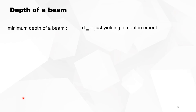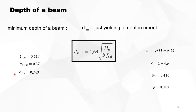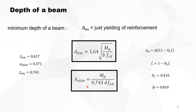There is also a minimum depth of a beam — this is the depth where the steel is just yielding. We know that when the steel is just yielding, delta_G times C is 0.416 and 0.81, the limiting neutral axis position is 0.617, µD limit is 0.371, and zeta limit is 0.743. So the minimum depth of a beam is 1.64 times the square root of the bending moment divided by width times fcd, along with a corresponding minimum reinforcement given by that formula.